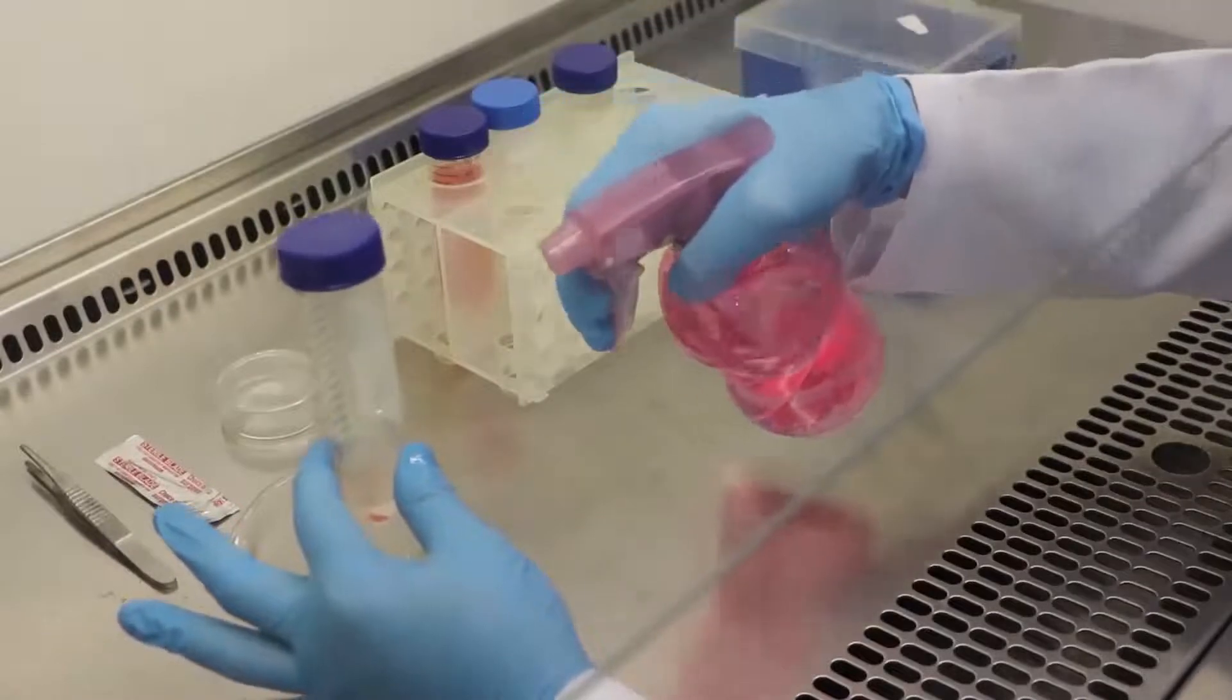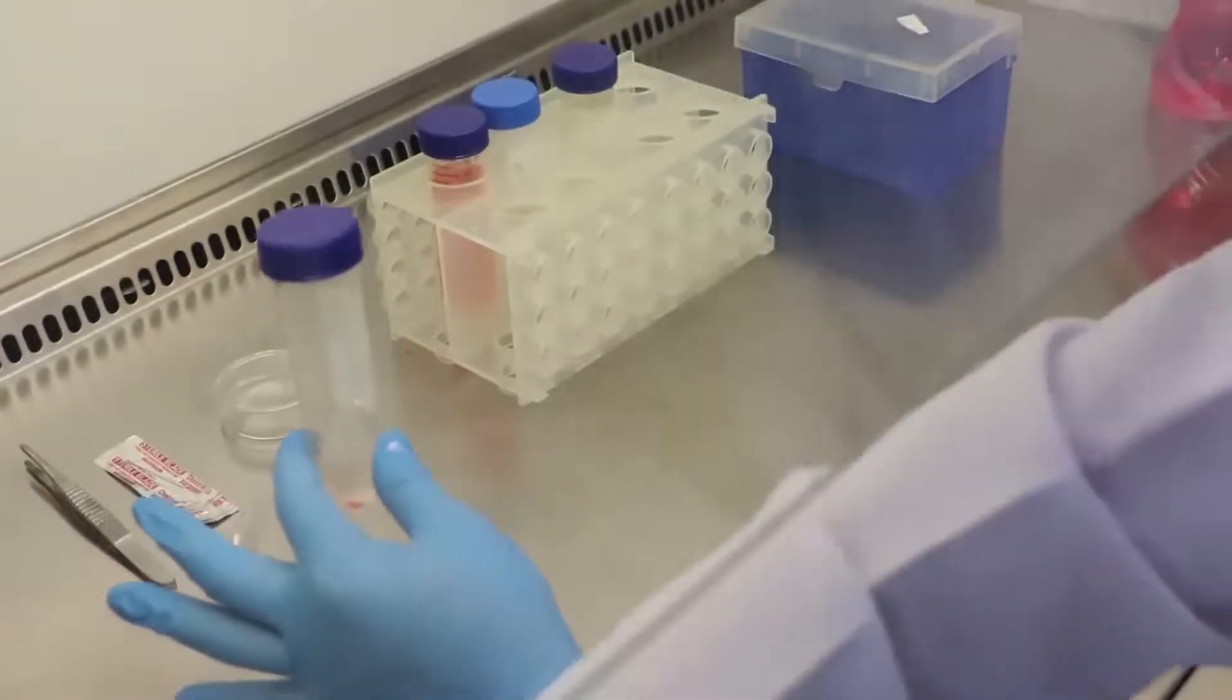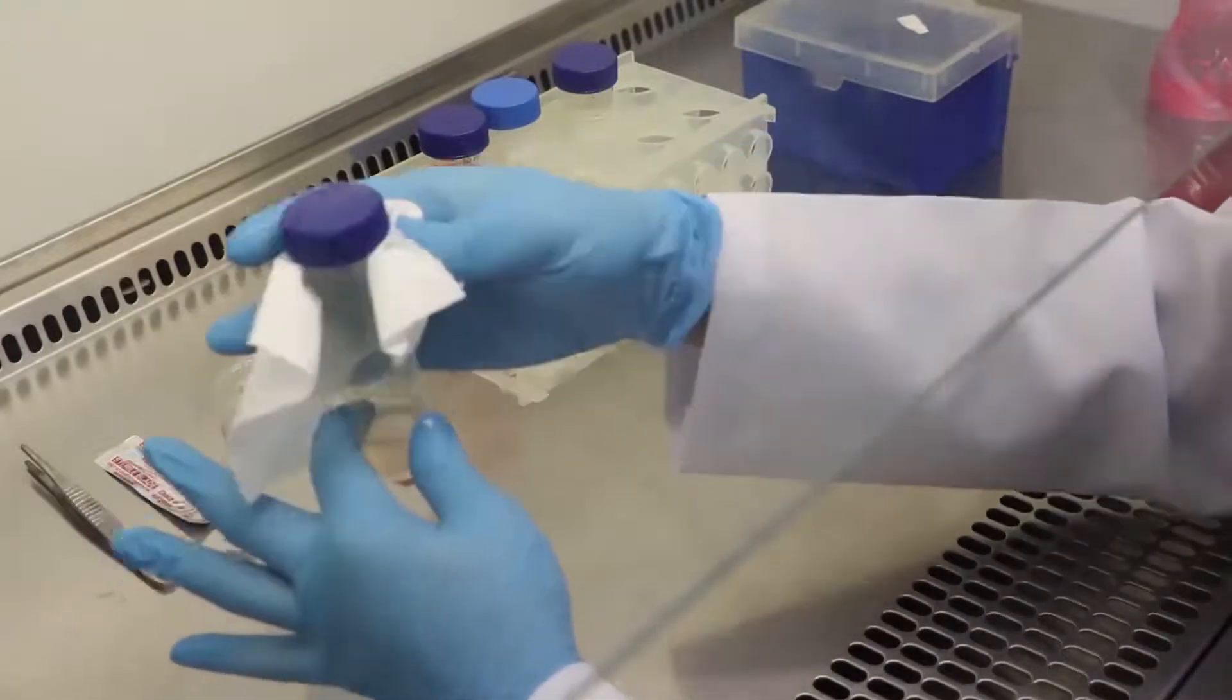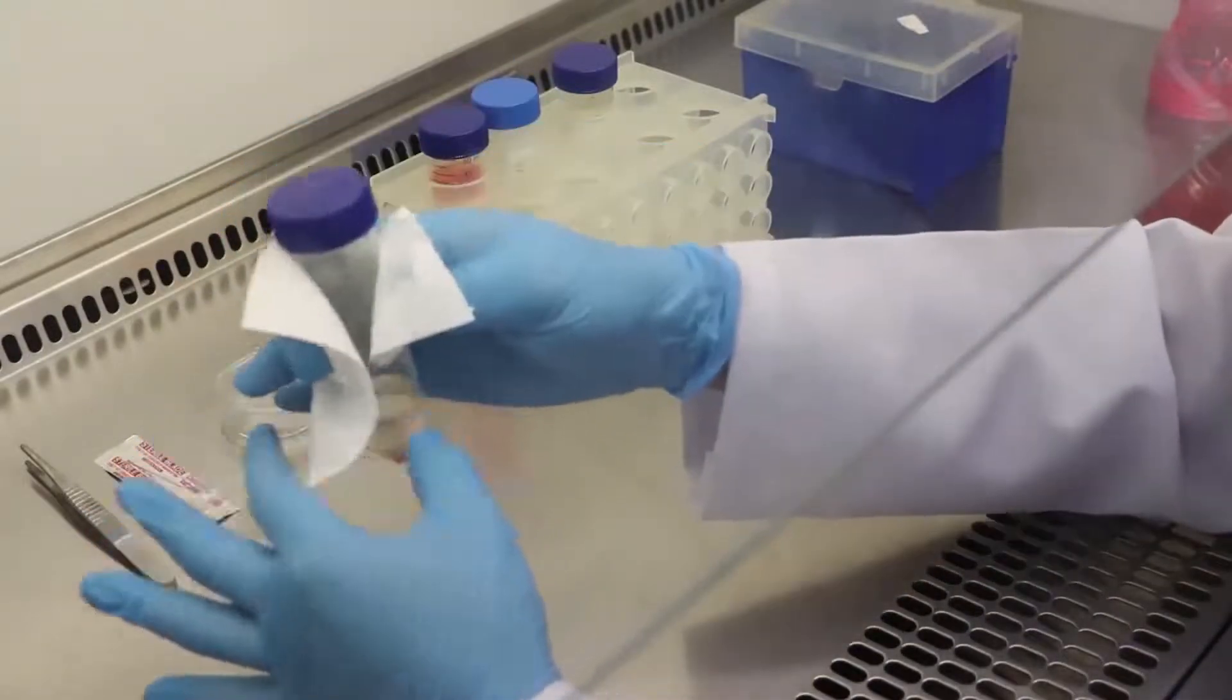Collect the tissue in a 50ml falcon tube containing 10ml of ice-cold ACSF. Wipe the collection tube carefully with 70% alcohol and transfer to an aseptic laminar air flow chamber.